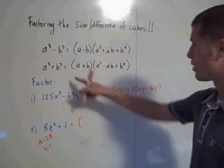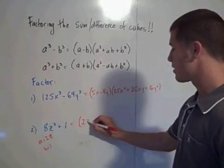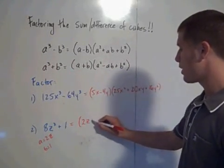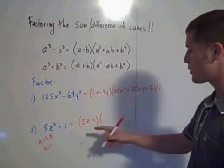So this factors to—we're looking at this formula now—2z plus 1 times 2z squared,